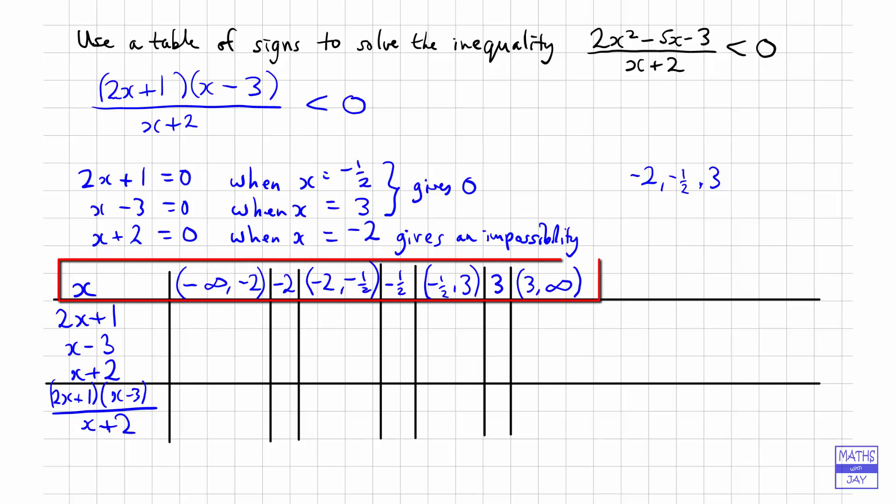So looking across the top, we're starting from minus infinity and going up to infinity, and just pausing at each of the values when one of our factors can be 0. So minus 2, minus 1 half, and 3. So that is actually the hardest bit. In fact, I made my table a bit too long, didn't I? Never mind.